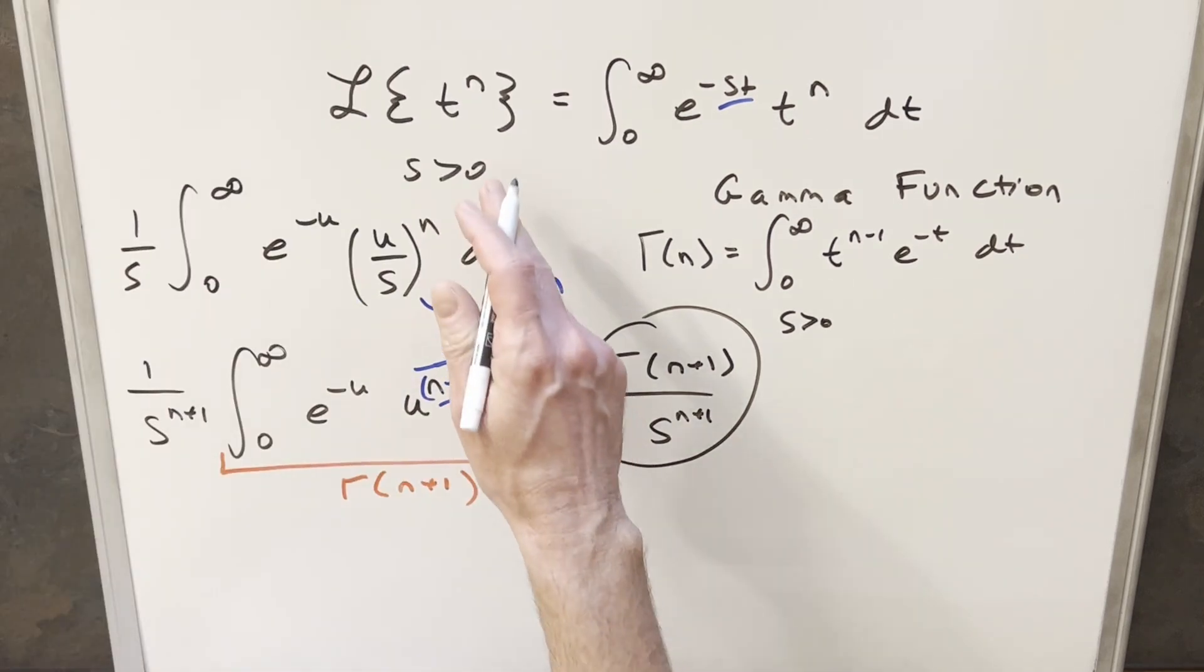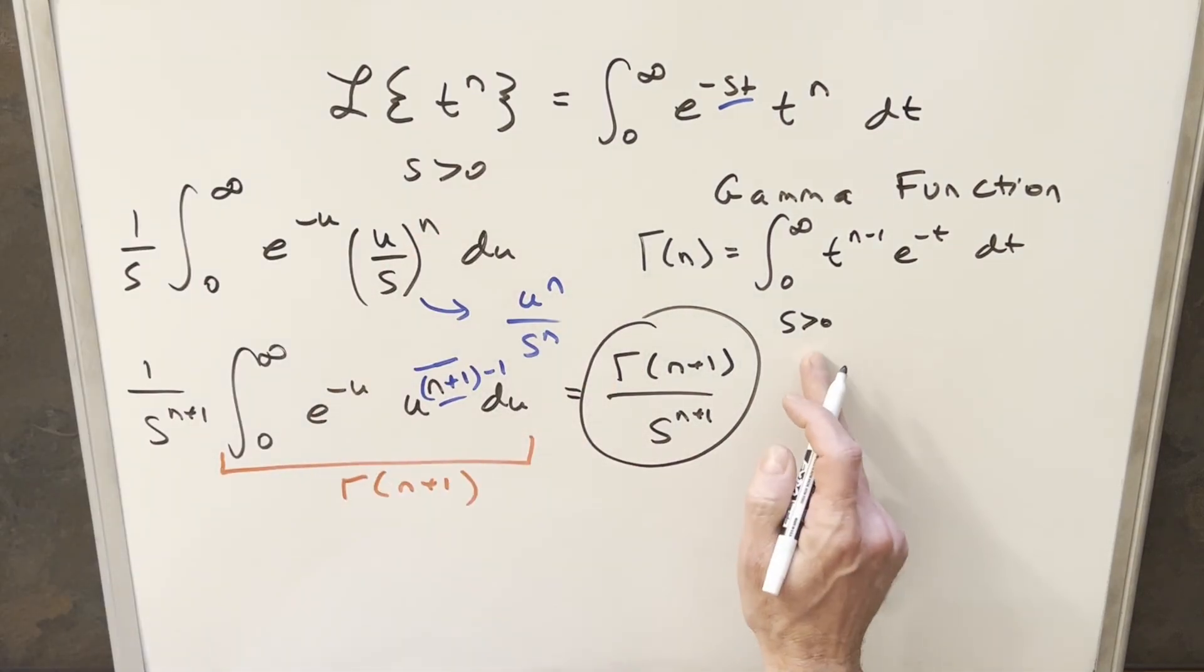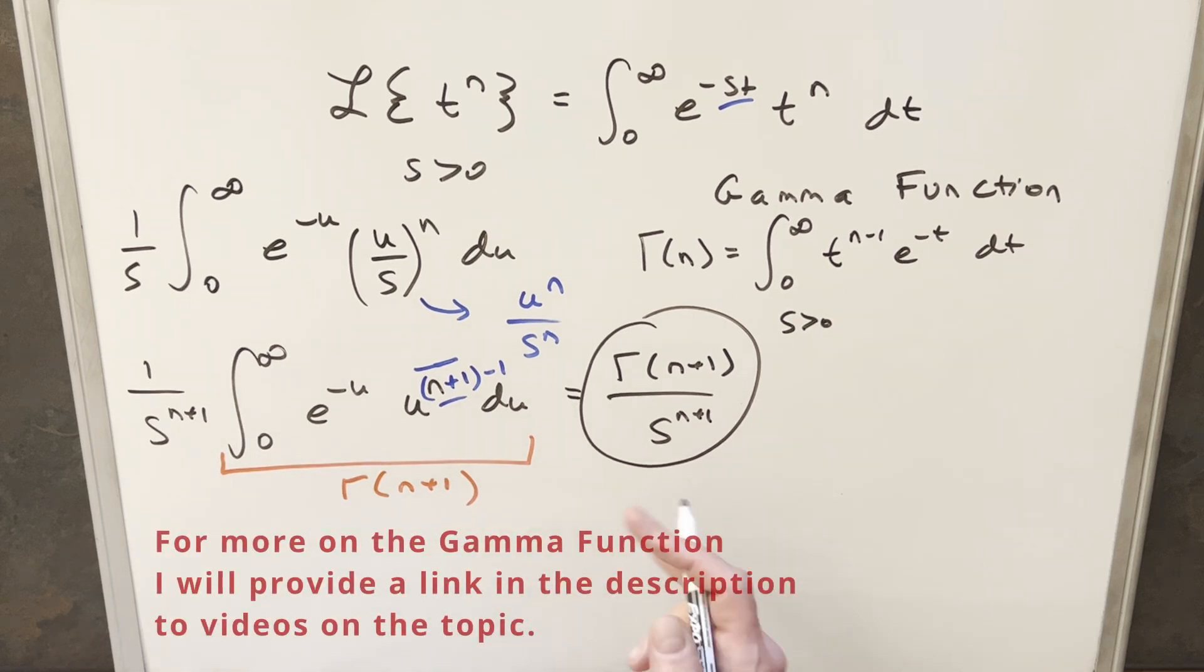So with that, we have our formula for the Laplace transform of t to the n with this restriction that s needs to be greater than zero. Now at this point, you might be kind of uncomfortable with how to use this, or what do we do with the gamma function? Well, we can look at a couple examples to get a better idea.